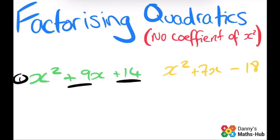So let's think of all the factor pairs of 14. 1 times 14, they don't add to give us 9. 2 times 7, that does add to give us 9, so those are what goes in the brackets.